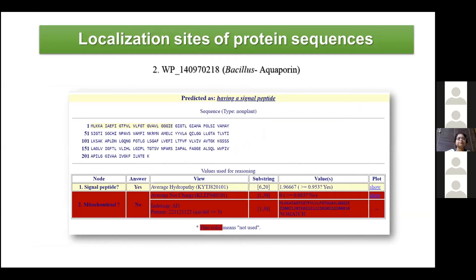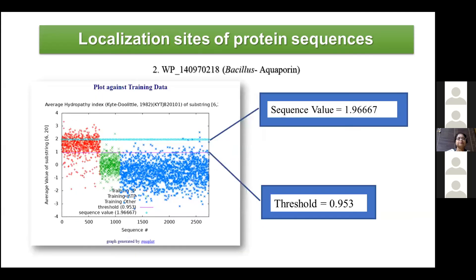In the next exercise, we took the aquaporin protein from Bacillus. Since it is a non-plant, only two nodes are considered: signal peptide and mitochondrial peptide. The software judged yes for signal peptide. The IP-sort predicted the protein as having a signal peptide. The average hydropathy index plot threshold is 0.953, while the value of the sequence is 1.96667. Since the sequence value crossed the threshold and is much higher than it, the protein is considered hydrophobic, which corresponds to the statement that the signal peptide has a conserved hydrophobic H-region. Mansi will present about amino acid indexing.